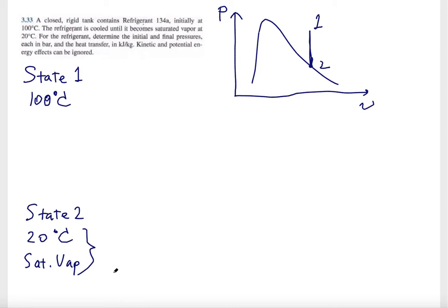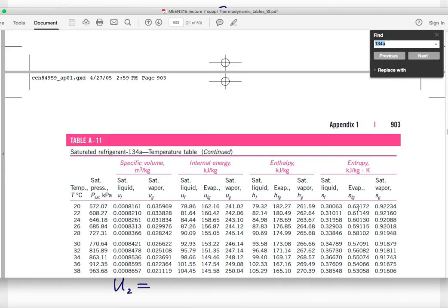From here, we can use the thermodynamic property table to get everything about point 2: pressure, specific volume, and internal energy. You may wonder why internal energy, because it's going to be useful to figure out the heat transfer from state 1 to state 2 in this process.